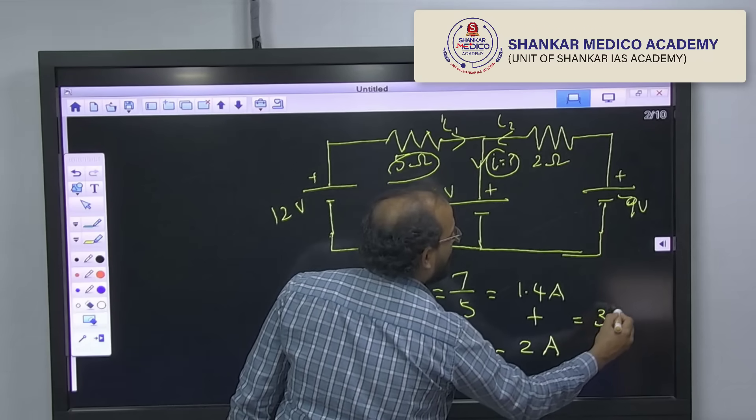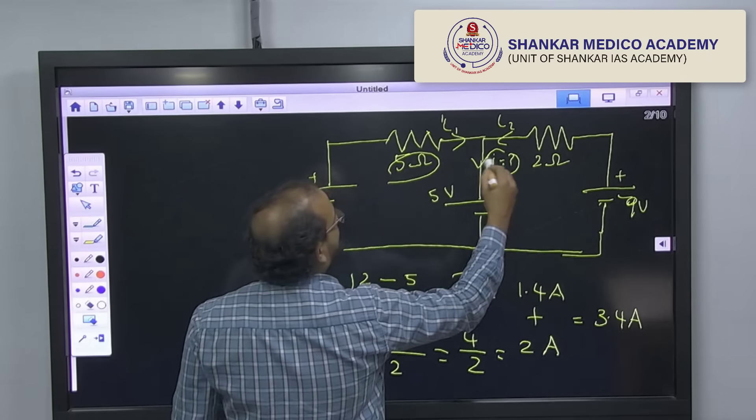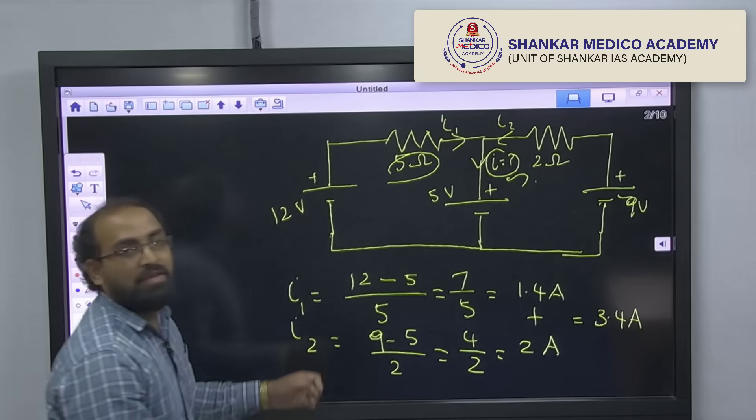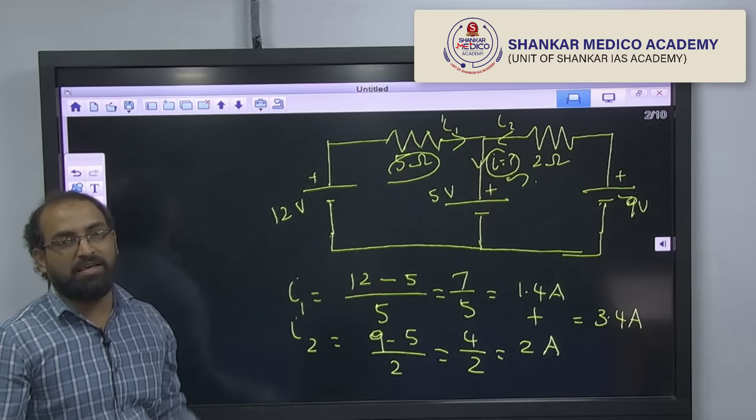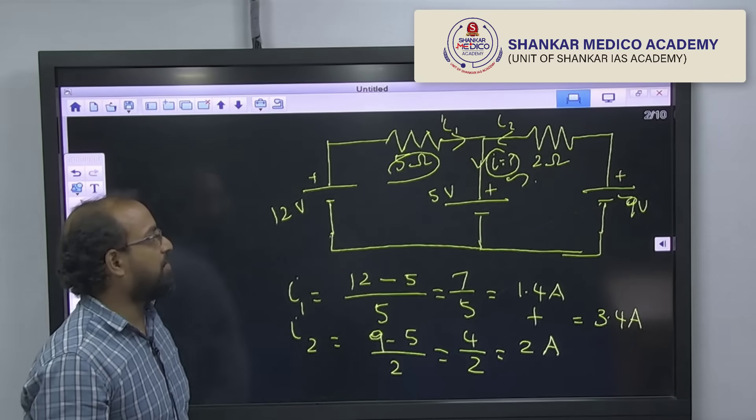When you add these 2, you will end up with the answer 3.4 ampere, that is your answer. Within few seconds, we can easily get the answer for this circuit.